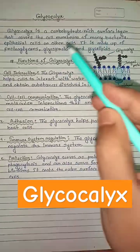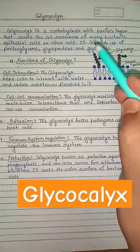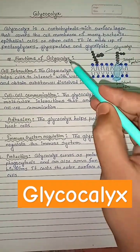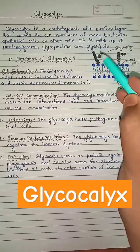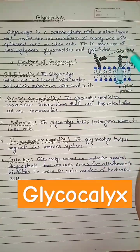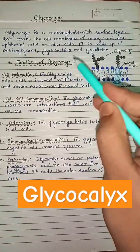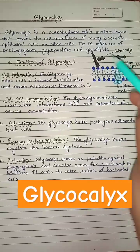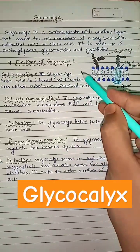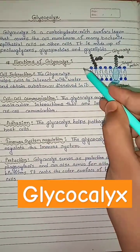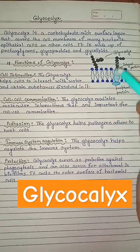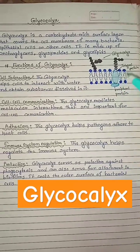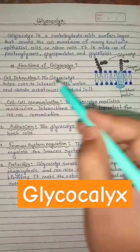Glycocalyx is a carbohydrate-rich surface layer that covers the cell membrane of many bacteria, epithelial cells, or other cells. It is made up of proteoglycans, glycoproteins, and glycolipids. This is a diagram of the cell membrane showing the glycocalyx and its functions.